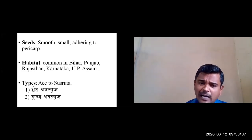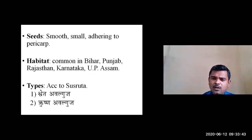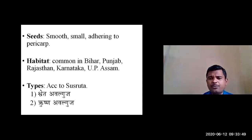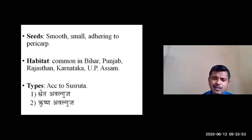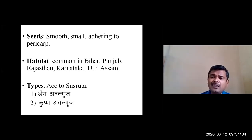Regarding Utpattisthana (place of origin): Bakuchi is common in Bihar, Punjab, Rajasthan, Karnataka, Uttar Pradesh, and Assam — especially in the drier parts of India where rainfall is less. Acharya Sushruta specifically mentioned two types of Bakuchi, while Charaka has not mentioned the types.